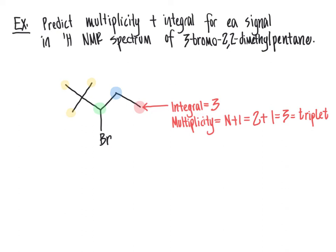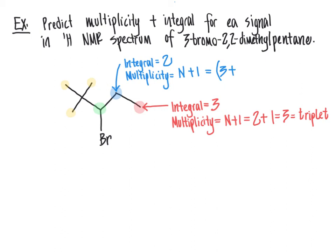Moving to the blue CH2 group: its integral is two. For its multiplicity, we count the total vicinal hydrogens. Looking right to the adjacent carbon, there are three vicinal hydrogens from the CH3 group. Looking left, there is one vicinal hydrogen from the CH group. So N = 3+1 = 4 vicinal hydrogens total, and N+1 = 5, meaning this signal is a multiplet or pentet.